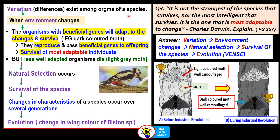Let's discuss another question from the textbook. The quote from Charles Darwin: 'It is not the strongest of the species that survives, nor the most intelligent that survives. It is the one that is most adaptable to change.' Explain this statement.